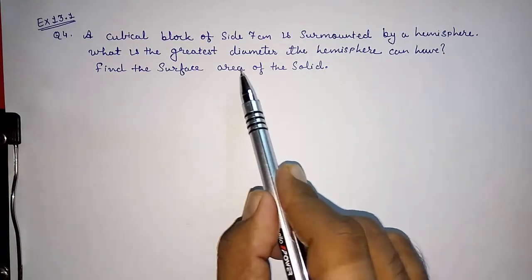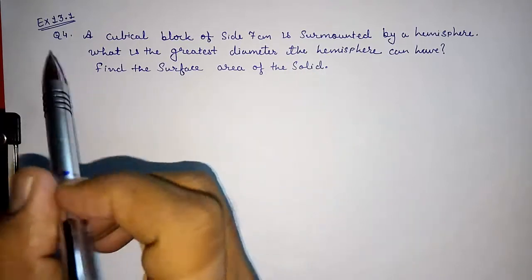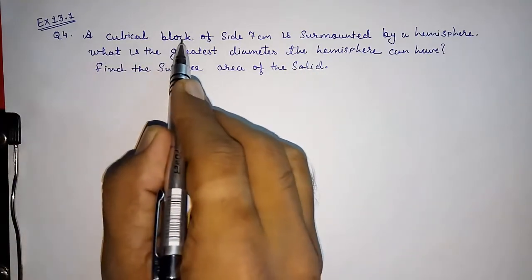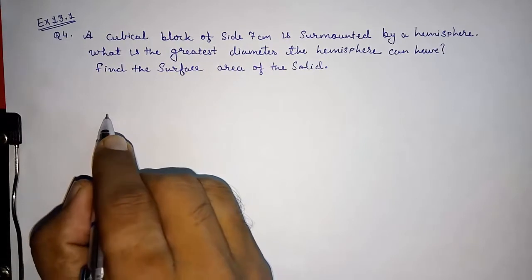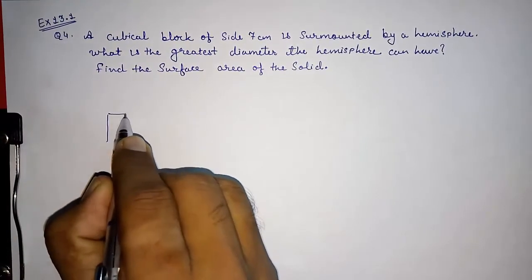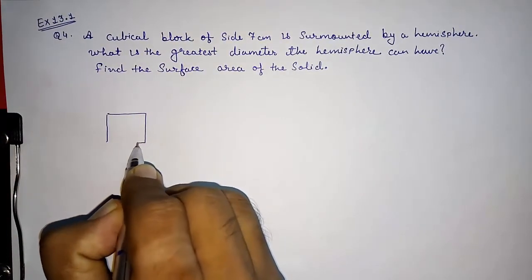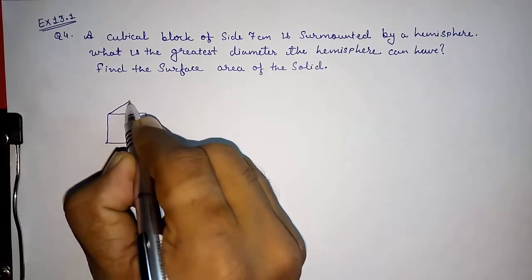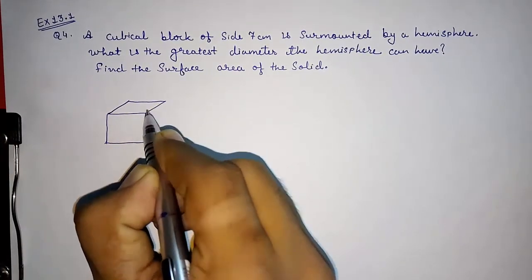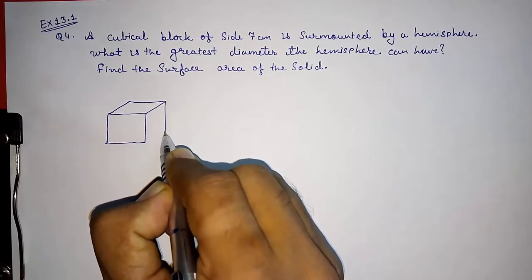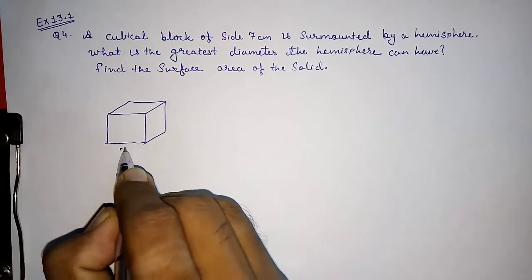Find the surface area of the solid. We are having a cubical block of side 7 centimeters. We are drawing a figure. This is a cubical box of side 7 centimeters.